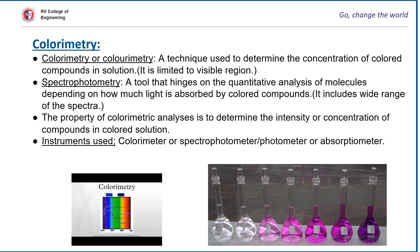Colorimetry is a technique used to determine the concentration of colored compounds in solutions. It is just limited to visible spectrum. Colorimetry is almost similar to another technique called spectrophotometry, a tool that deals with quantitative analysis of molecules depending on the amount of light absorbed by colored compounds. But the difference between colorimetry and spectrophotometry is that the latter includes a wide range of spectra.